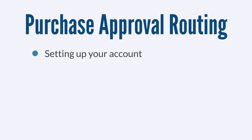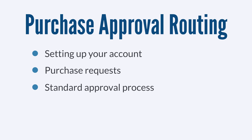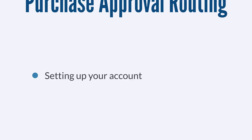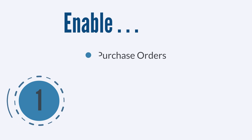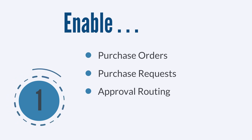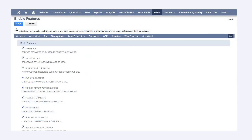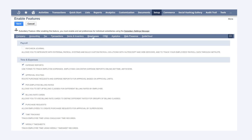We'll look at setting up your account for purchase approval routing, discuss how purchase requests work, and then walk through the standard approval process. The first step in purchase approval routing is to enable three key features in NetSuite: purchase orders, purchase requests, and approval routing. The purchase orders feature is located under the transaction subtab of enable features, while purchase requests and approval routing are both located under the employee subtab of enable features.